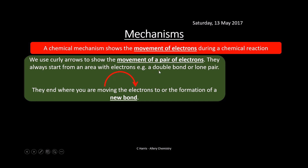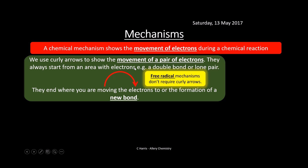Mechanisms in organic chemistry show the movement of electrons during a chemical reaction. We use curly arrows to show the movement of a pair of electrons — they always start from an area with lots of electrons, for example a double bond or lone pair, and end up either forming a new bond or breaking a bond. You'll also see free radical mechanisms, but you don't need to know curly arrows for those.